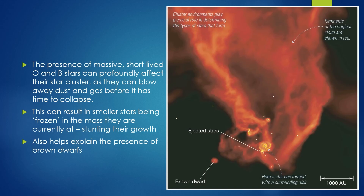The presence of massive, short-lived O and B stars can profoundly affect a star cluster, as they can blow away dust and gas before it has time to collapse. This can result in smaller stars being frozen in the mass they currently are, really stunting their growth — and this explains the presence of brown dwarfs, which are stars that may have been starting to form and gaining mass, but the O and B stars that formed early blow away all of the material that would be needed for that brown dwarf to become a fully fledged star.